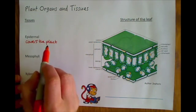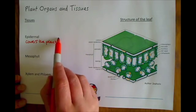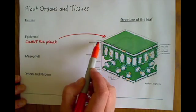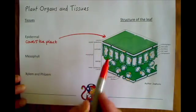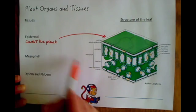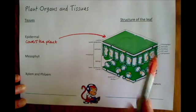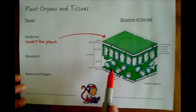So we'd find the upper epidermis, or the epidermal tissue, over here at the top and also at the bottom where it's covering the plant. This is actually a section of a leaf, which we'll come to in a minute.